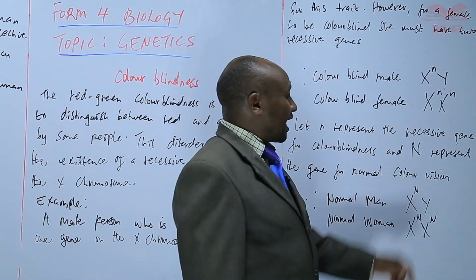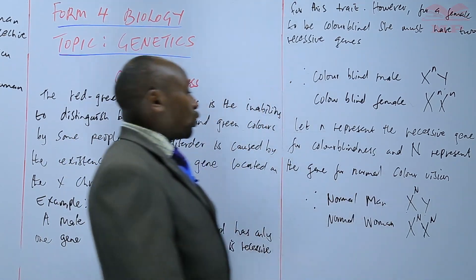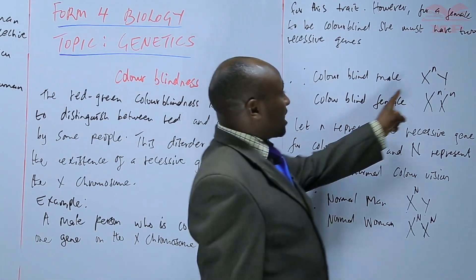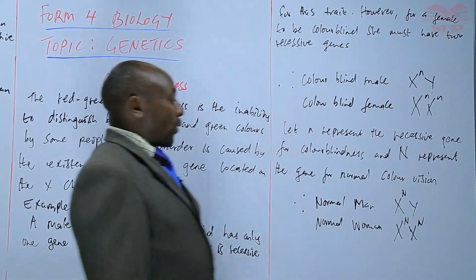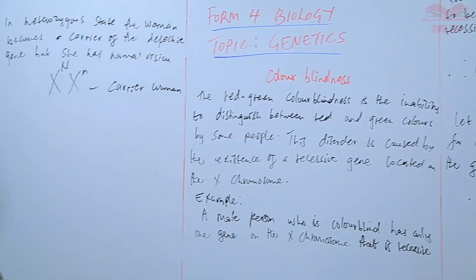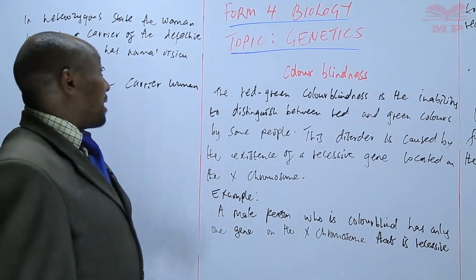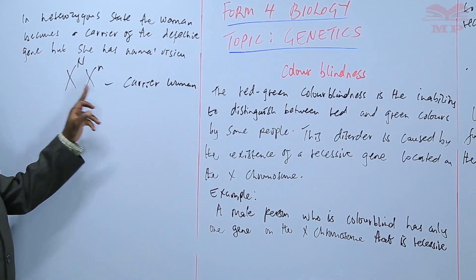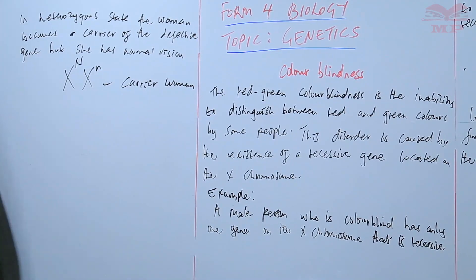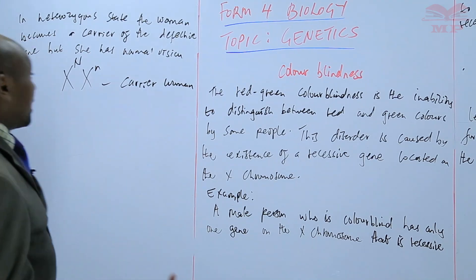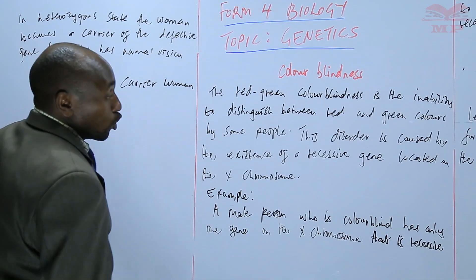Uppercase N shows normal color vision, and lowercase n shows color blindness. Where both alleles exist — one normal and one color blind — that woman is a carrier. A male cannot be a carrier because the male doesn't have two X chromosomes; a male has only one X chromosome, so the male can only be either colorblind or normal.